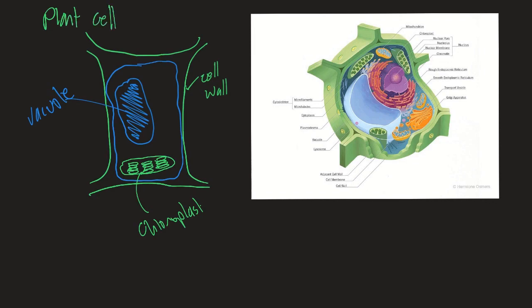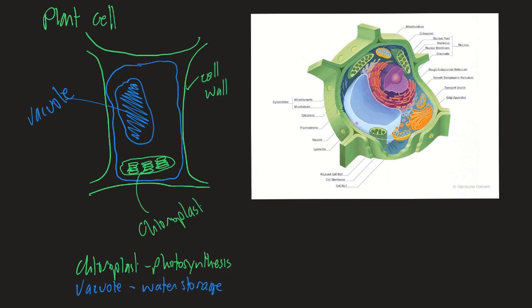To summarise, the key differences between plant cells and animal cells are the chloroplast, the vacuole — which is involved in water storage — and the cell wall.